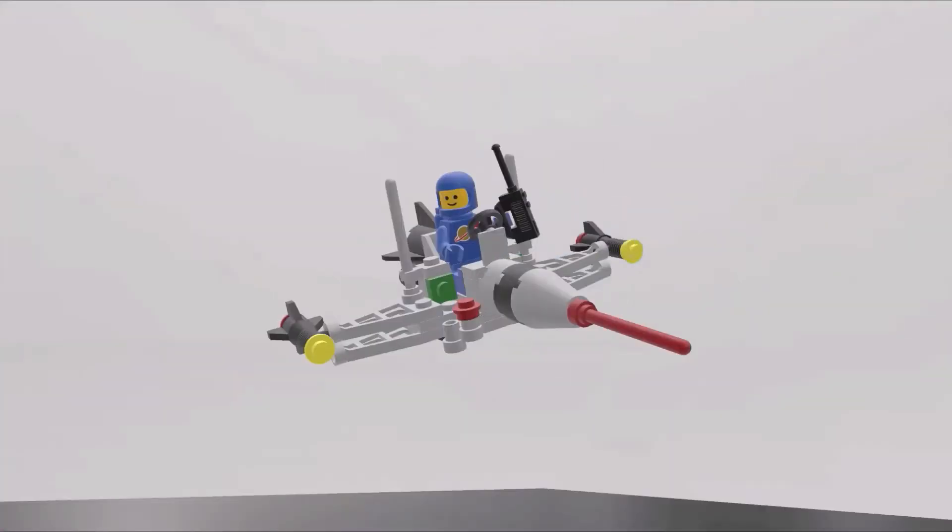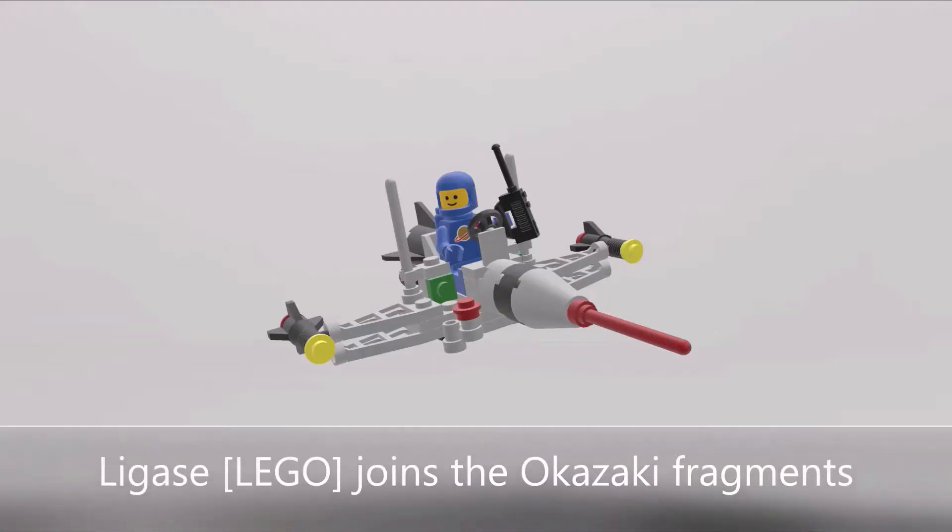Then we see the Lego man. Lego man for ligase. What are Legos used for? To build things. That's exactly what ligase does. After DNA polymerase III has done its job, ligase comes along to join the Okazaki fragments on the lagging strand.